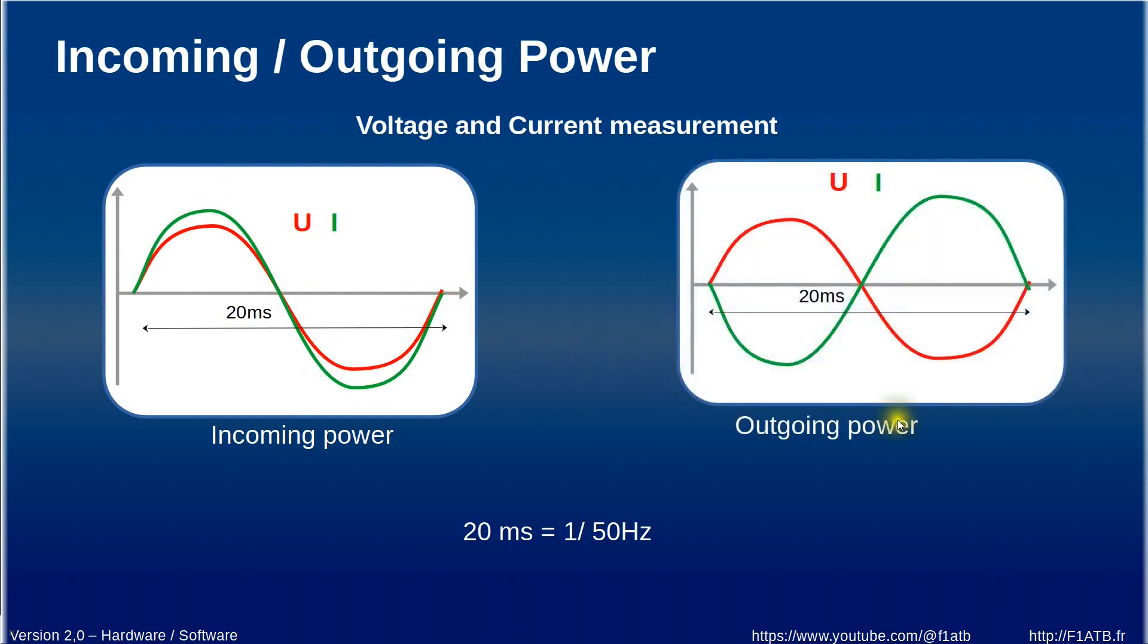On the other hand if we are in a situation of outgoing power we have the voltage still in red and the current in green is in opposition in terms of phase. When the voltage is maximum, the current is negative as minimum.